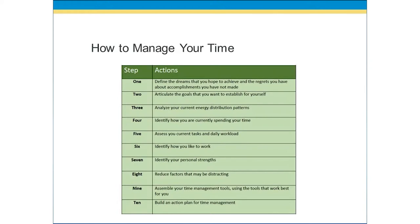From there, you can go into step two, which is articulating the goals that you want to establish for yourself. When you articulate your goals, you want to identify exactly what it is that you want to succeed in — what do you want to achieve? From there, you can go to step three: you have to look at and analyze your current energy distribution patterns.